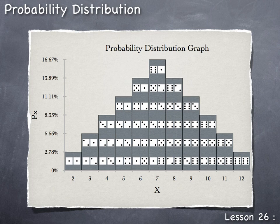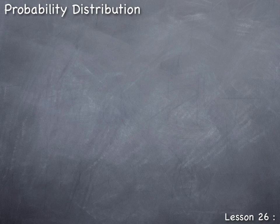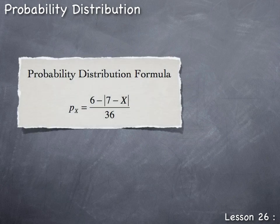Probability distributions can also be provided in formula form. The probability distribution formula for the game of craps is: P(X) = (6 − |7 − X|) / 36. Any particular value of the random variable can be plugged into this formula, and the resulting output equals the probability of obtaining that result.